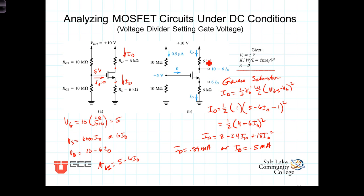If we had 0.89 milliamps flowing through here, what would the voltage be at the source? Well we know that V_S would be 6 times I_D in milliamps. So V_S then would equal 6 times 0.89, that equals 5.34 volts. Now is that plausible? If I've got 5 volts here and 5.34 volts here,